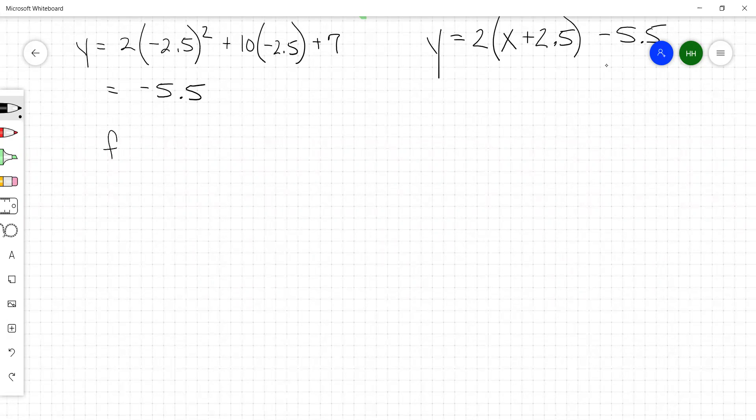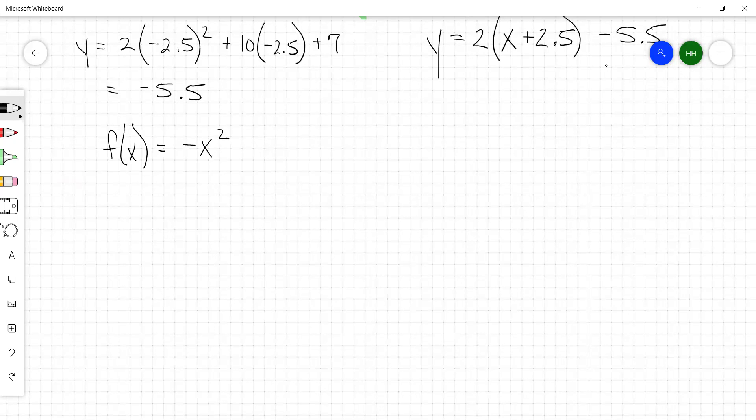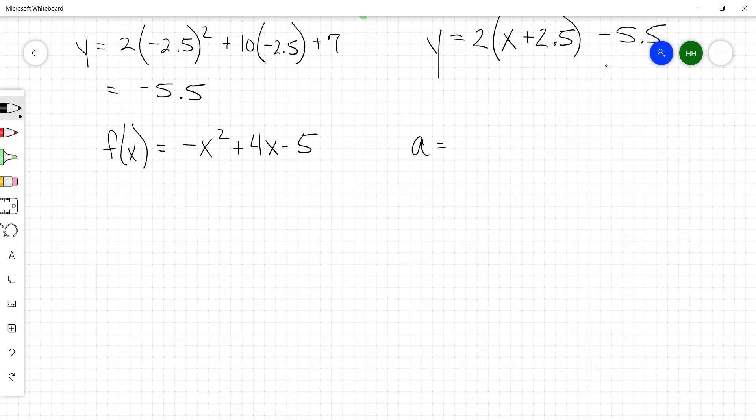So we're going to write this equation in vertex form. Let's say that we got the function of x equal to negative x² plus 4x minus 5. Our a value is equal to negative 1, our b is equal to 4, and our c is equal to negative 5.